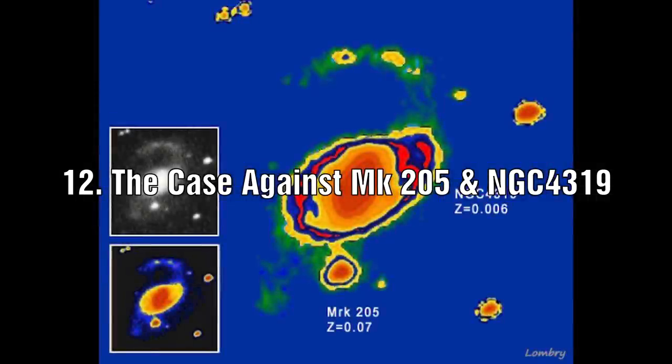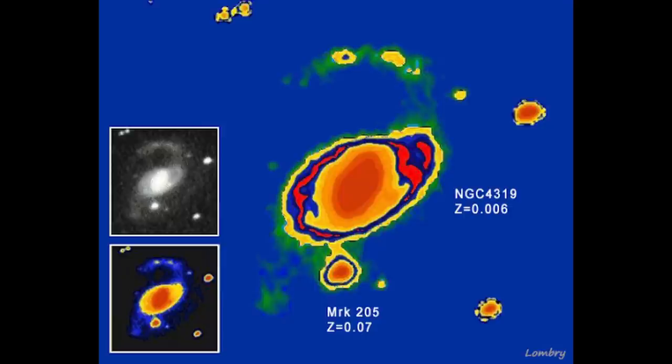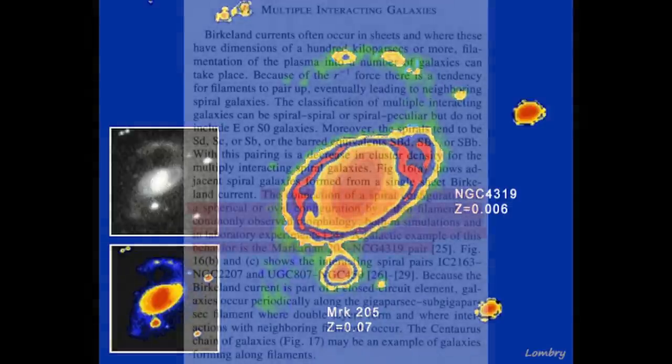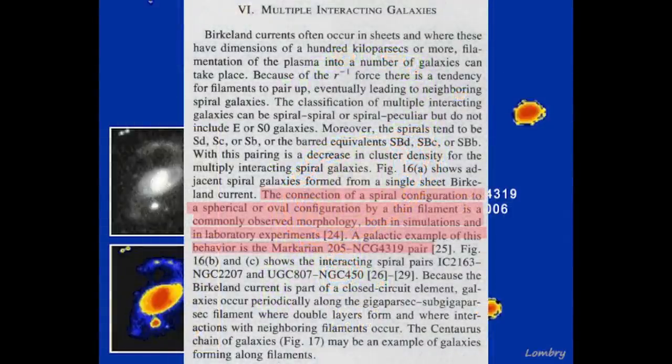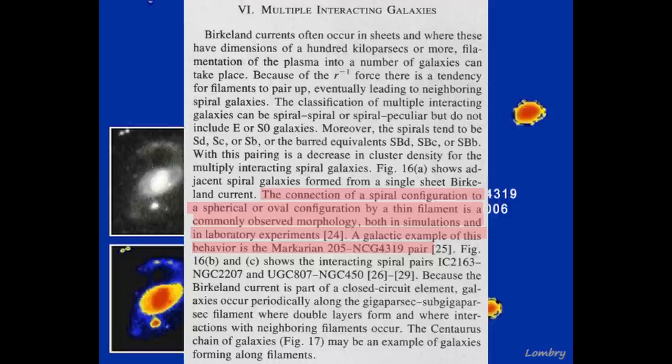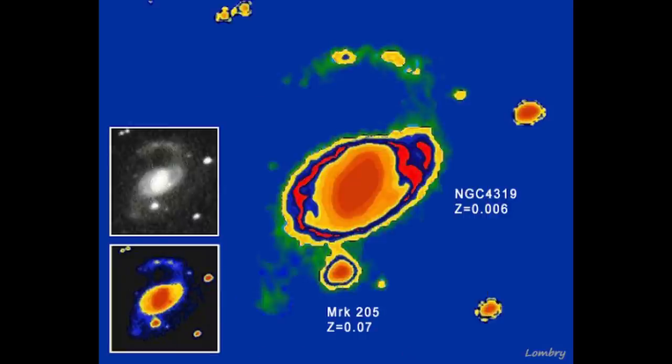The case against Markarian 205 and NGC 4319. Peratt uses this as an example of multiple interacting galaxies. If we examine an image of this merger, the first thing you will notice is the difference in size and the stage of their development. NGC 4319 has clear spiral arms and Markarian 205 seems to be nestled in one of the arms of NGC 4319.